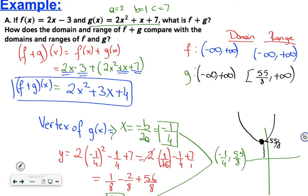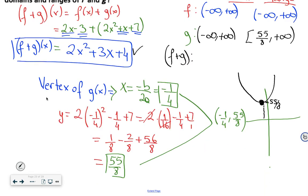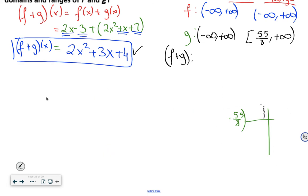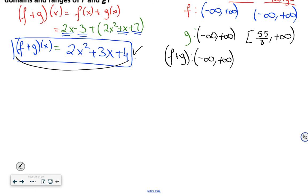Now let's check the domain and range of (f + g)(x), which is 2x squared plus 3x plus 4. This combined function is also a quadratic function, so you can give any x value to it. Therefore, the domain of (f + g) is negative infinity to positive infinity. To find the range, we need to find the vertex.